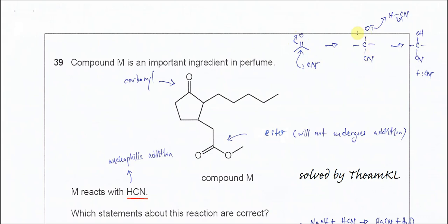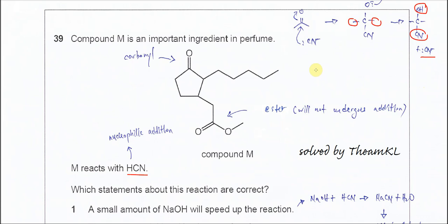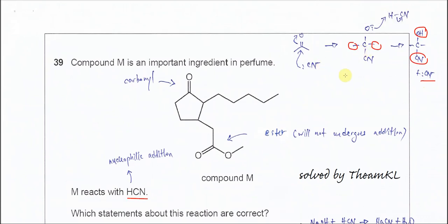This is the intermediate, and we don't really care what group is here. This oxide is going to get a proton from HCN and eventually form OH. It will form cyanohydrin at the end. The C-H bond breaks, this pair of electrons moves to carbon, and it will regenerate the cyanide.